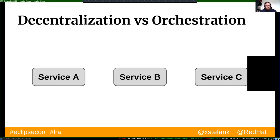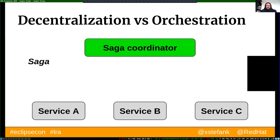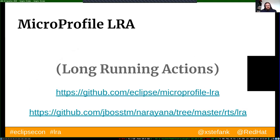There are two approaches to implementing this in a distributed system. The first is choreography — what I showed you, where the saga definition is in one place and sent between services. However, this is against the loose-coupling principle of microservices. The second is orchestration, where a standalone saga coordinator service manages the transaction between individual services — services can enlist with the coordinator, similar to how 2PC works.